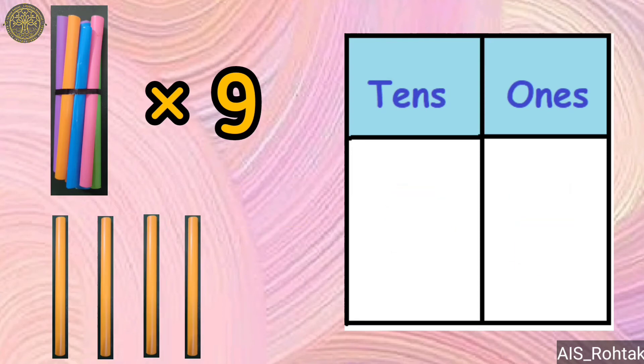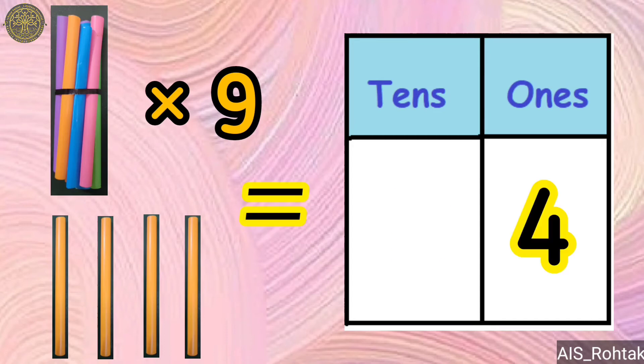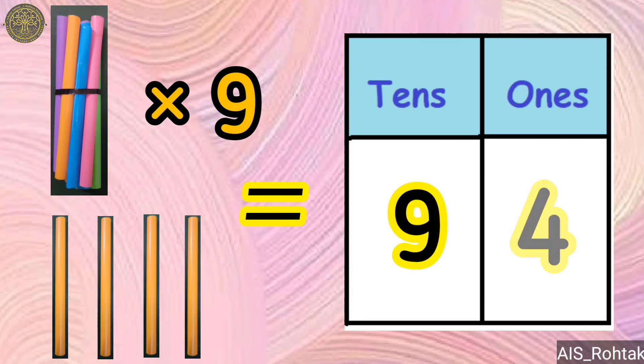Nine bundles and four loose sticks make the number 94 — nine tens and four ones.